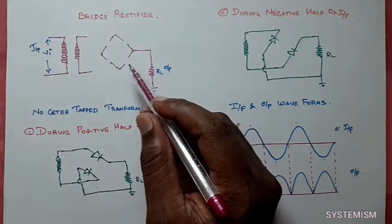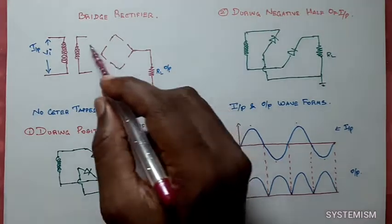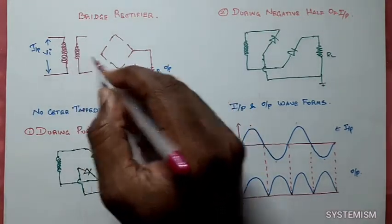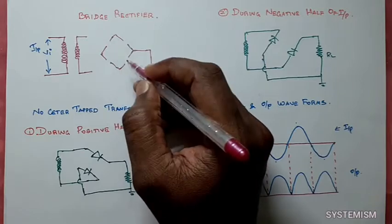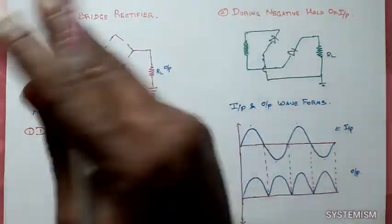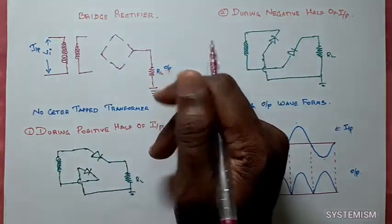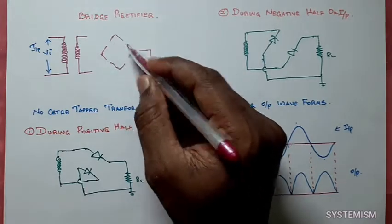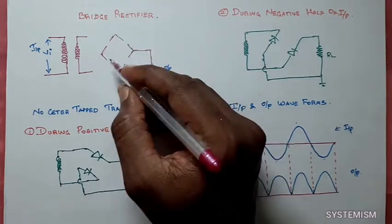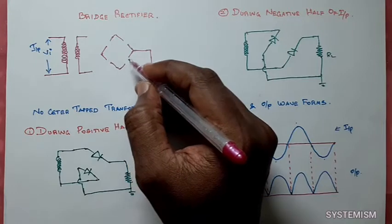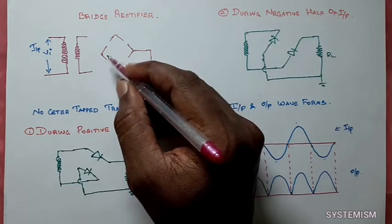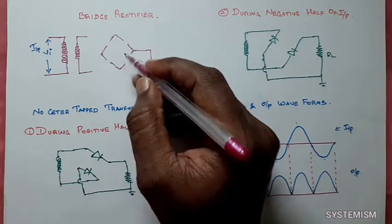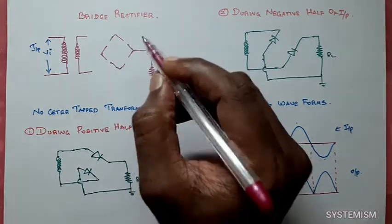So now this is our bridge rectifier. Here also we have a transformer and we have four diodes connected to it. In normal full wave rectifier, only two diodes, but here we have to connect four diodes. This is our bridge connection. We should know how to connect the bridge. Diode direction is very, very important while connecting this bridge rectifier.